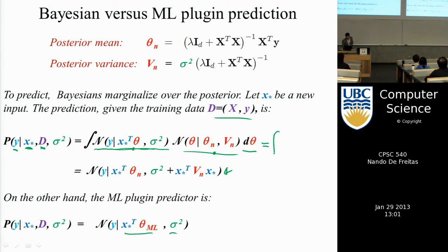Which, the frequentists approximate this, because essentially what they do is they replace this integral by a Gaussian, y given x theta, sigma squared. And then they use a delta function at theta ML, d theta. The delta function is just a spike at one value.